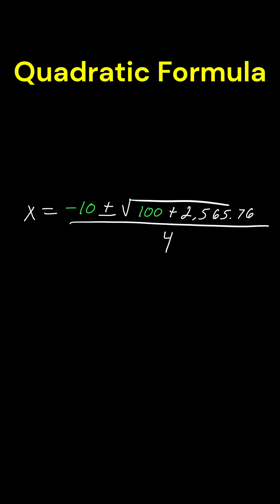Let's add 100 plus 2,565.76 and let's take the square root of that. I'm just going to round it at 51.63. All of this is going to be divided by 4.